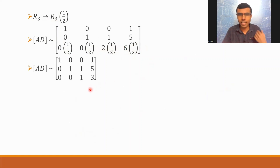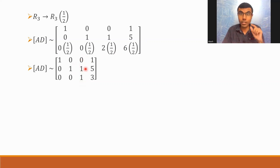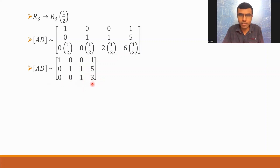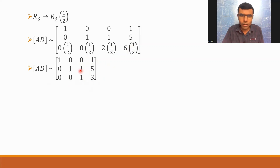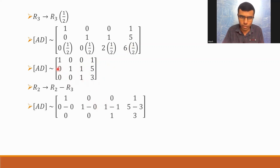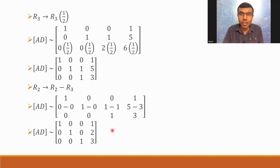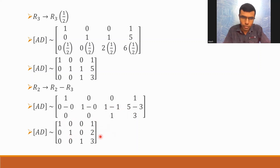If I complete that operation, I get 1 in the third position. There is already a zero at the top, and I only need a zero here — I do R2 implies R2 minus R3. The intermediate step: 0 minus 0, 1 minus 0, 1 minus 1, 5 minus 3. If I simplify, I get the final result. So basically, x equals 1, y equals 2, and z equals 3. That's my solution.